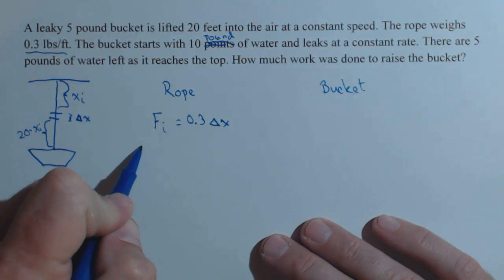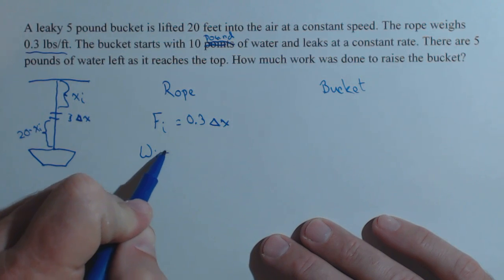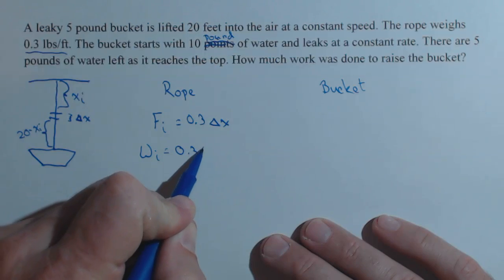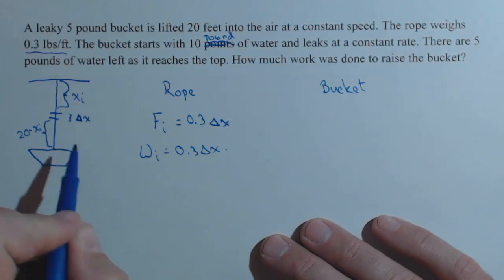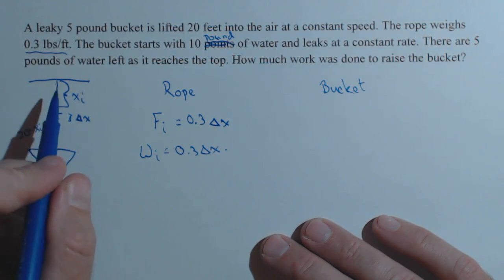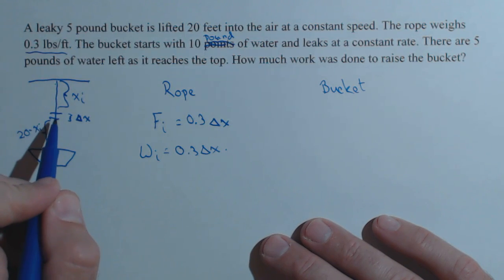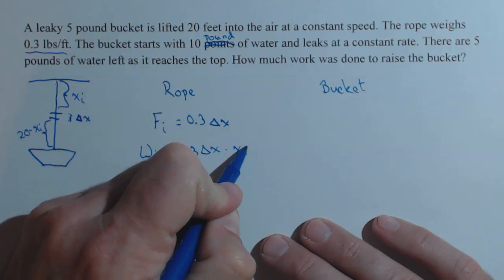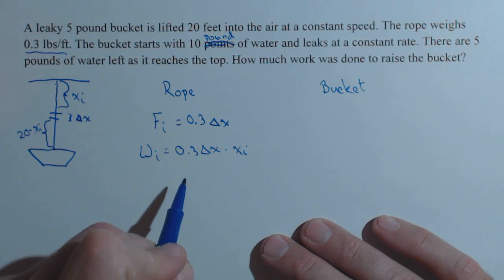So now we're going to find the work on the ith slice, which is the force on the ith slice, which we already calculated. It's 0.3 delta x times the distance the ith slice is going to be moved when everything is said and done. It's going to go up x sub i feet. So there's the work on the ith slice.